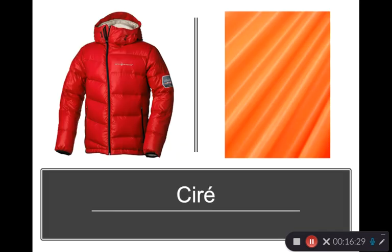Ciré — meaning wax in French — is a permanent calendar finish that gives a very wet, high-shine look, changing the luster of a fabric. A hot metal roller slightly melts and flattens the surface of thermoplastic synthetic fibers, producing a high gloss. The flattening creates a larger surface area, and you can make fabrics wind- and waterproof using this heated ciré finish.